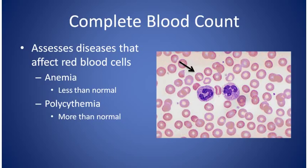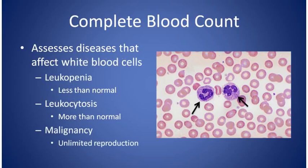Anemia is when there are fewer than normal red blood cells. Polycythemia is the problem of more than a normal amount of red blood cells present. The CBC also assesses diseases that affect the white blood cells, which fight infections in the body.